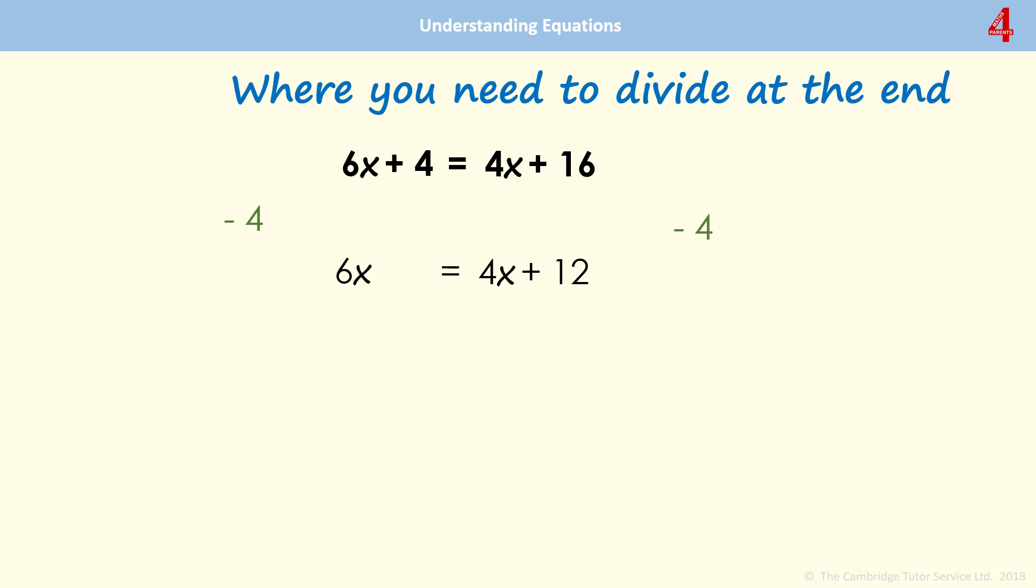Now I still have x's on both sides. So I need to get rid of the 4x on the right. So I'm going to take 4x away from both sides. That 6x now becomes 2x. And on the other side, I've taken those 4x's away. I just have 12.